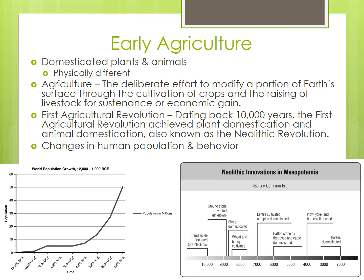So with the rise of plant and animal domestication, humans shifted from being hunter-gatherers to farmers. And we see the rise of agriculture, which is the deliberate effort to modify a portion of earth's surface through the cultivation of crops and the raising of livestock for sustenance or economic gain.